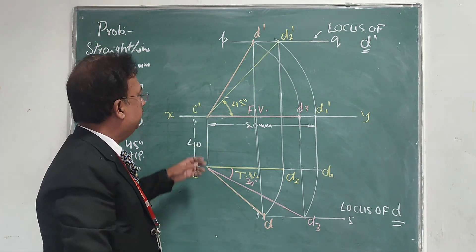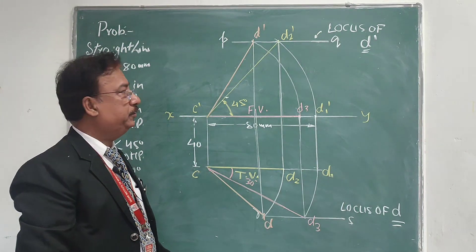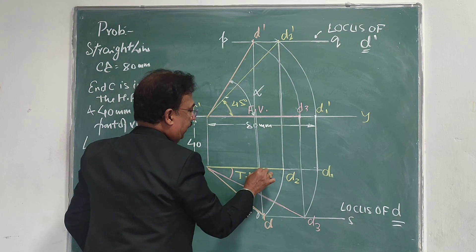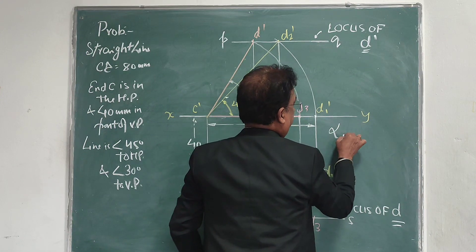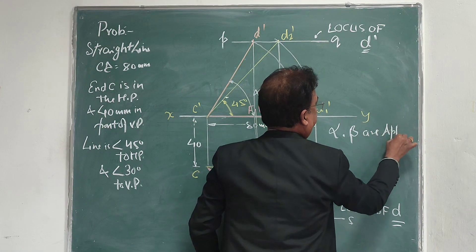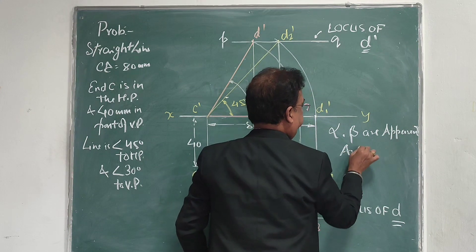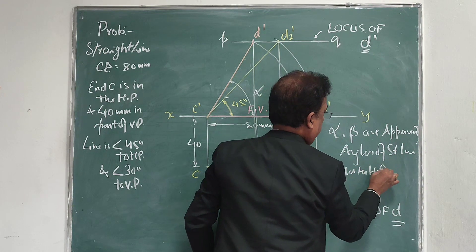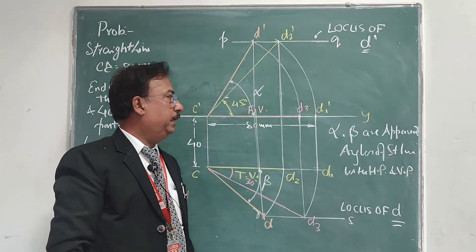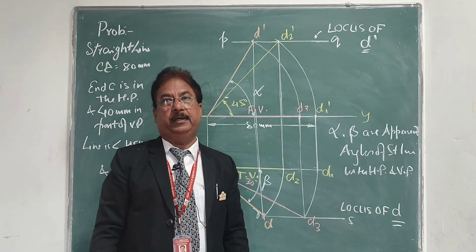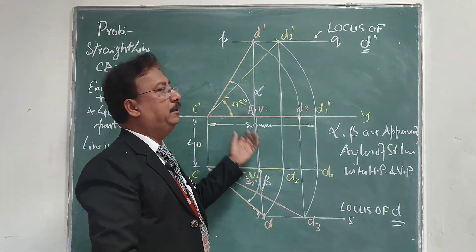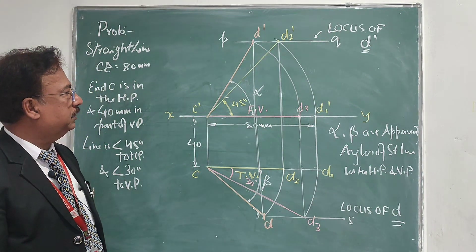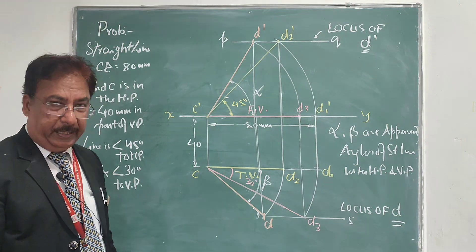This is the line inclined to both planes. In the final projection, both lengths are shorter than the true length, and the angles alpha and beta — these are the apparent angles of the line — are greater than the true inclination. I hope you understand the concept. This is the basic concept for solving a problem with a line inclined to both planes. Thank you very much.